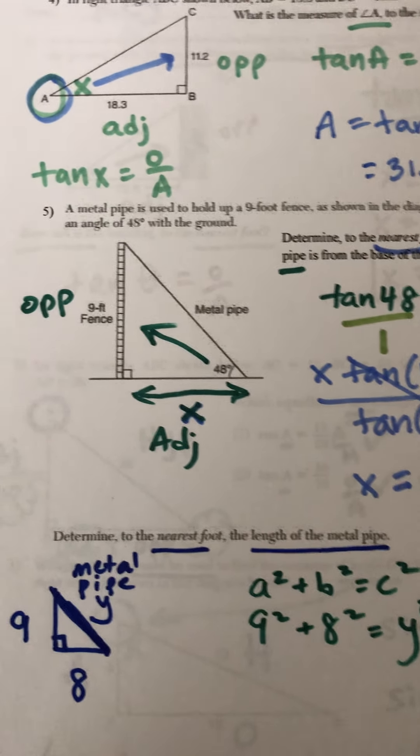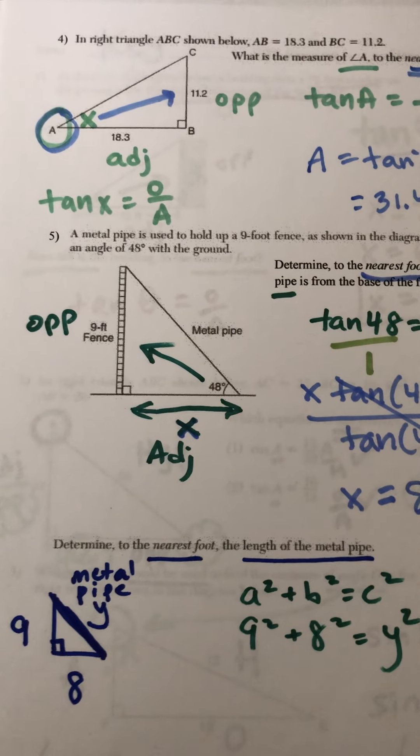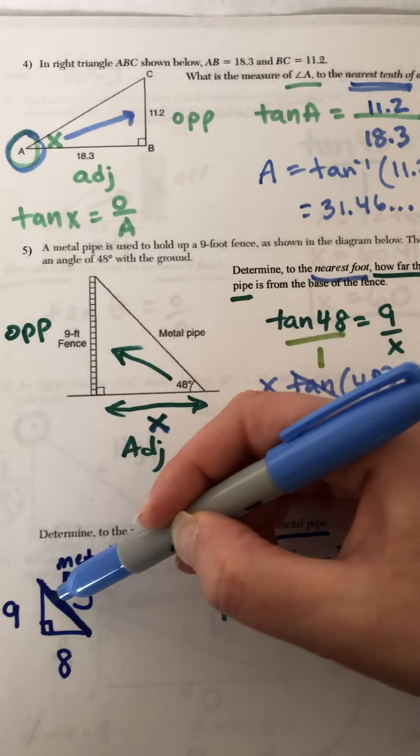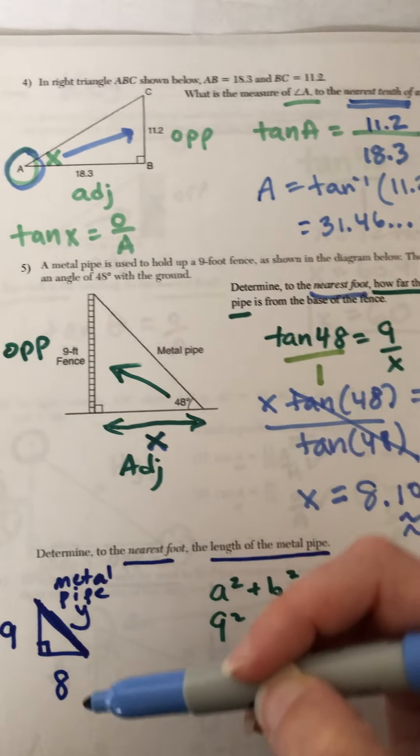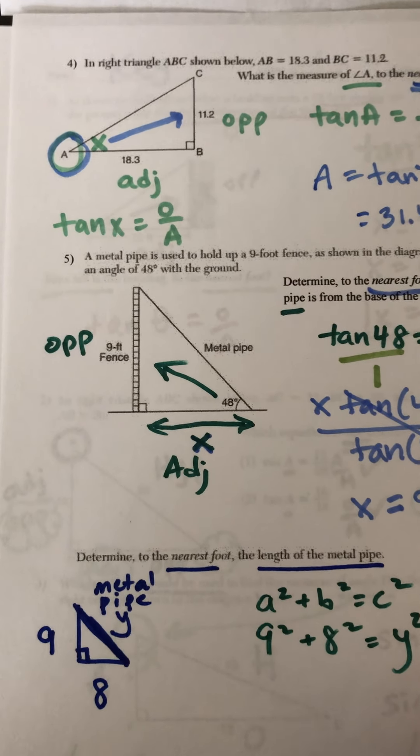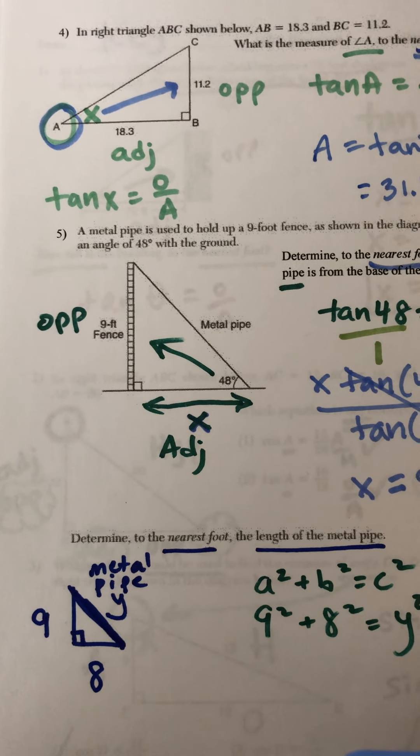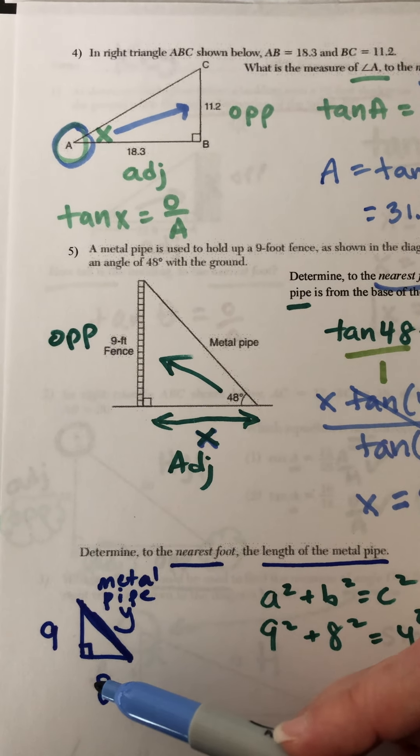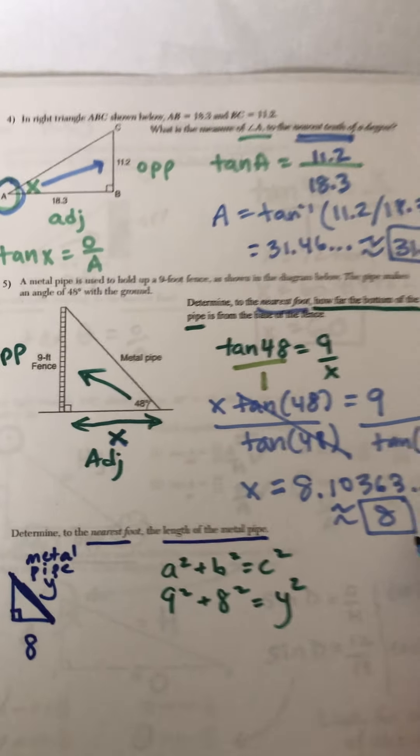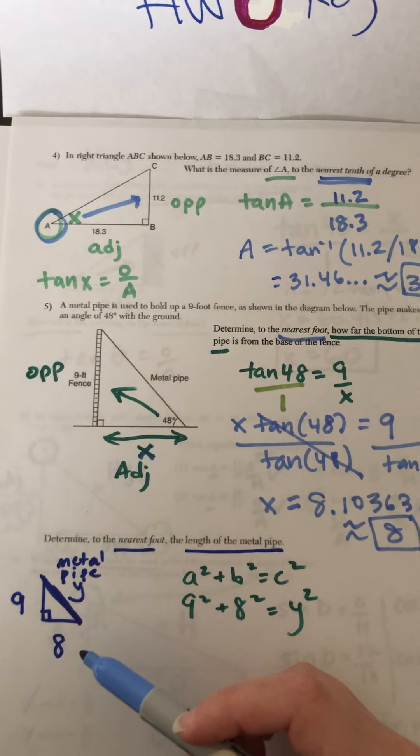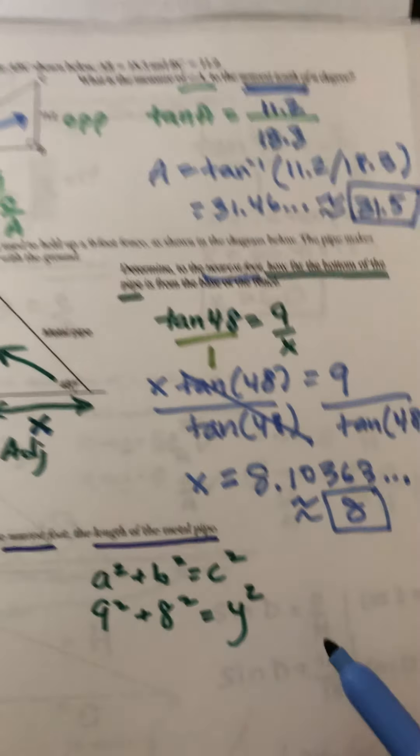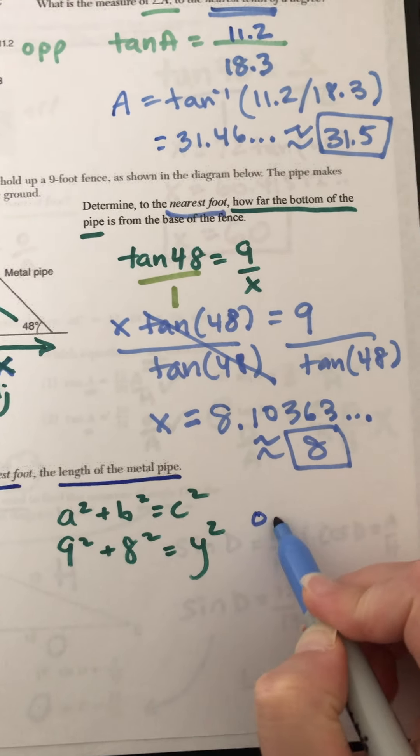But then a second question, a follow-up question, is asking to determine the nearest foot of the length of the metal pipe. Well, that's the amount here. I just redrew the triangle. Usually when there's a follow-up question, it helps to redraw the triangle and put the numbers that you know. So we knew the 9-foot fence from the previous part. We didn't know adjacent until we solved for the 8. So now I can write 8, 9, 8, and the unknown Y.